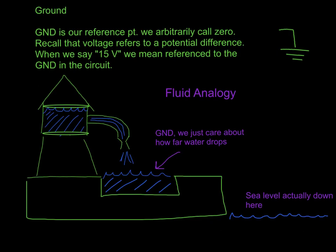Let's move on to ground — this is often a tricky concept. Ground is a reference point that we arbitrarily call zero. Recall that when you say a voltage, it always refers to a potential difference. When you build labs here and use the lab manual, we'll say things like 10 volts, 12 volts, maybe 120 volts — and that always means it's in reference to ground. There's no such thing as a voltage at one point; it's always a potential difference. So it's implied that we mean in reference to ground. Here's the symbol for ground, and in the fluid analogy, we're just concerned with where all the water drops down to — once it drops there, we've lost all the potential.